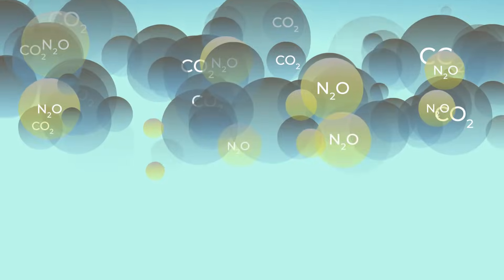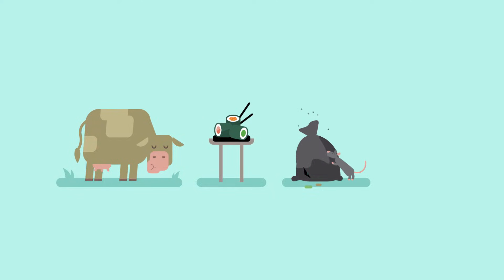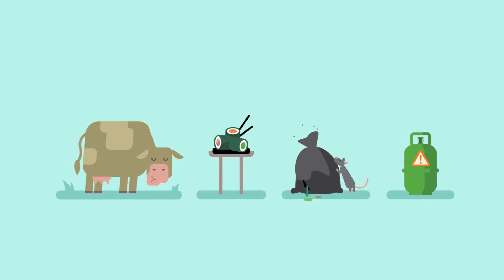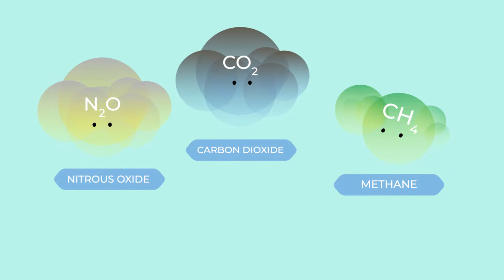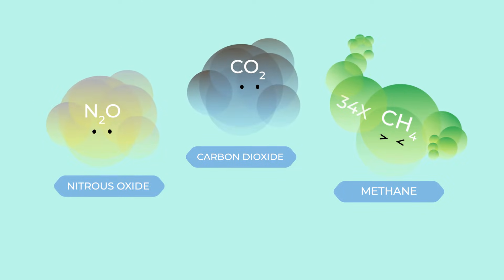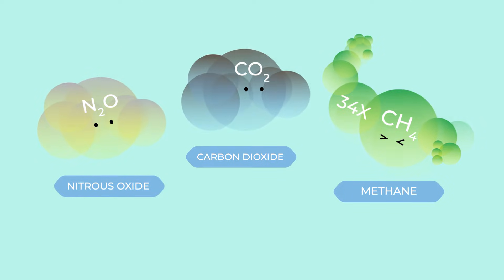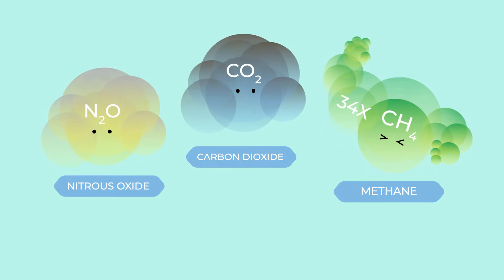Lastly, methane. Methane is mainly released by livestock farming, the cultivation of rice, landfill, and the extraction of natural gas. As a greenhouse gas, methane is about 34 times stronger than CO2, and is responsible for about 20% of the greenhouse effect. That's a significant contribution.